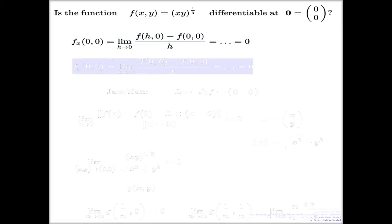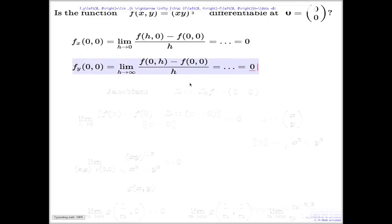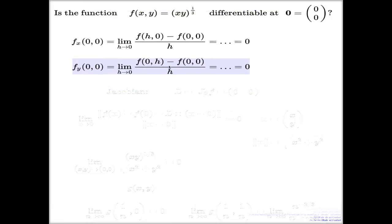A similar argument works for the second partial derivative. Because the function is constantly 0 when x equals 0, it is 0 from the formula. So we do have a Jacobian matrix, and that's the Jacobian matrix of my function at the point (0,0). That's a natural choice for the L matrix when we start testing for differentiability.